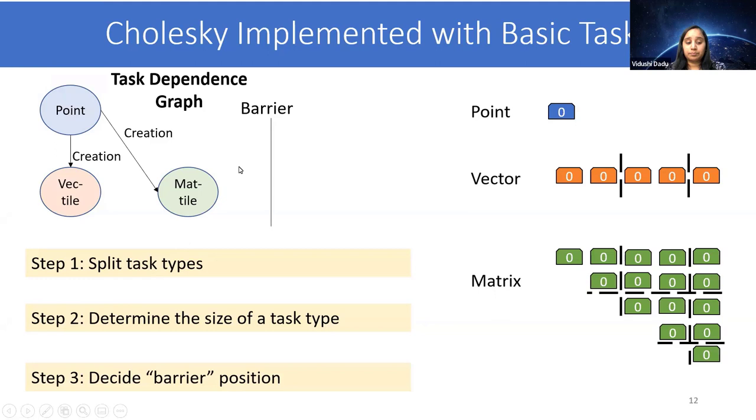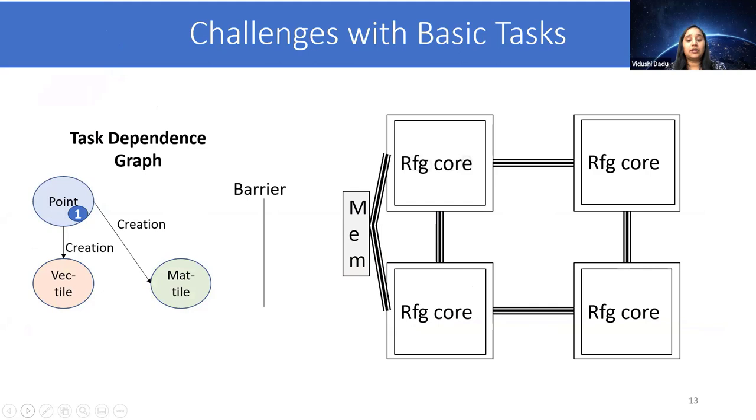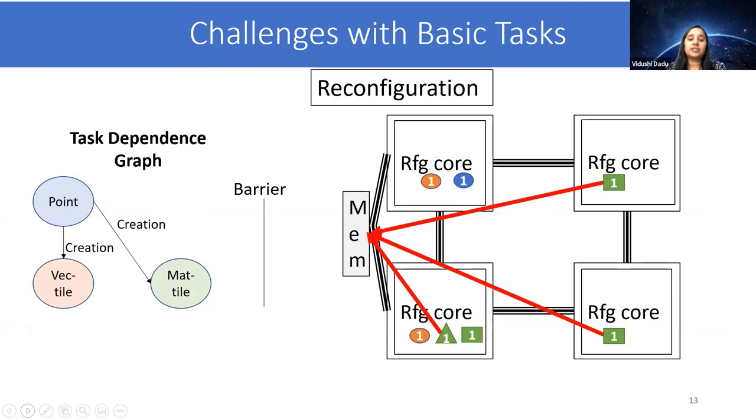To understand its impact, let's see how this task dependence graph would be implemented on traditional hardware. The task instance for one would be created at the reconfigurable core, and then its vector and matrix tasks would be created. These would then write data to memory at a barrier. As these tasks are scheduled being unaware of the configuration information, it can incur significant reconfiguration overhead. As the tasks are of variable size, it will cause load imbalance. And finally, because of waiting on a barrier, there will be synchronization overhead.